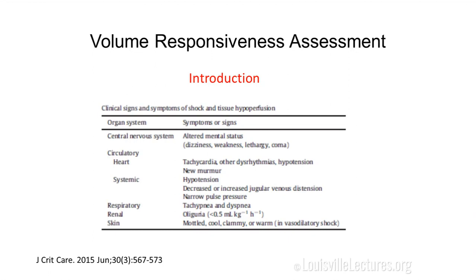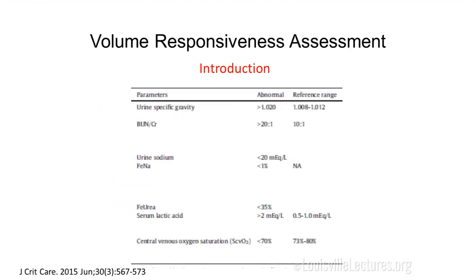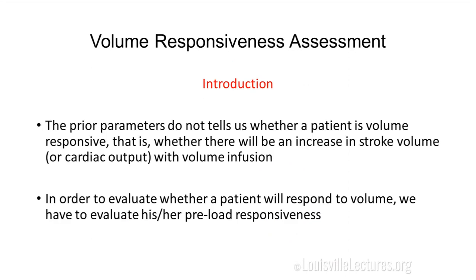The signs and symptoms of tissue hypoperfusion include mental status change, tachycardia, hypotension, tachypnea, oliguria, mottled skin, high urine specific gravity, high BUN-creatinine ratio, low urine sodium, low FENa, low FEurea, high lactic acid, low oxygen saturation, and low central venous oxygen saturation. These are all things to evaluate when assessing a patient in shock. However, these parameters tell us about tissue hypoperfusion but still don't tell us whether a patient is volume responsive.